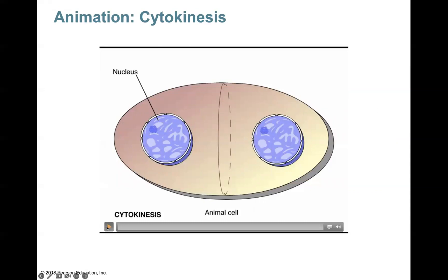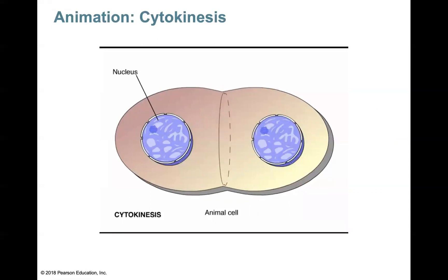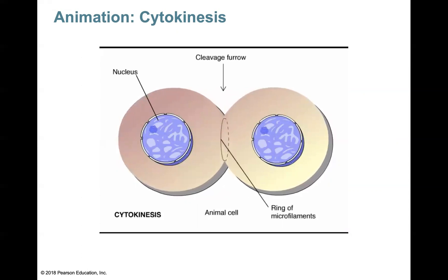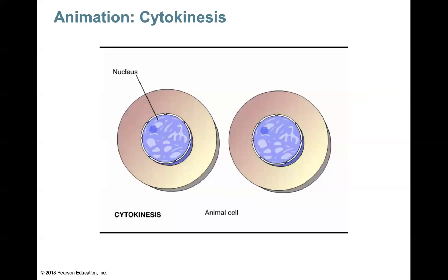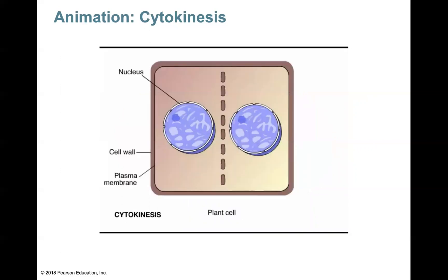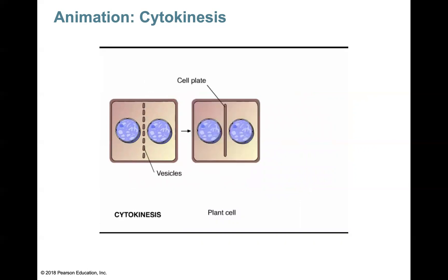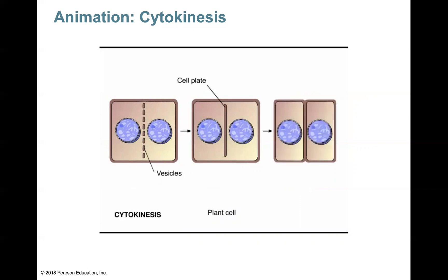Let's watch this animation. In animal cells, cytokinesis begins with the formation of a cleavage furrow. At the site of the furrow, a ring of microfilaments contracts, much like the pulling of drawstrings, pinching the cell in two and creating two identical daughter cells. In plant cells, cytokinesis begins when vesicles containing cell wall material collect in the middle of the cell. The vesicles fuse, forming a large sac called the cell plate. The cell plate grows outward until its membrane fuses with the plasma membrane, separating the two daughter cells and joining with the parental cell wall, resulting in two daughter cells each bounded by its own plasma membrane and cell wall.